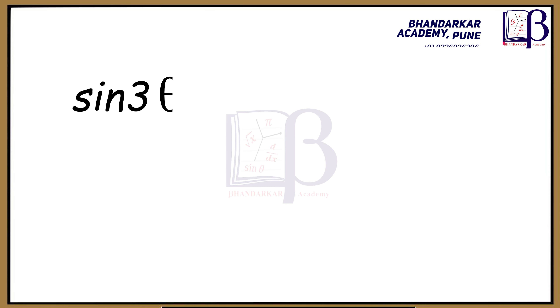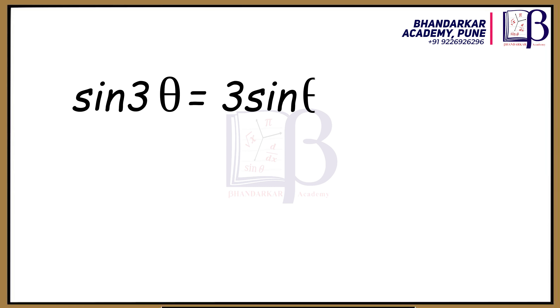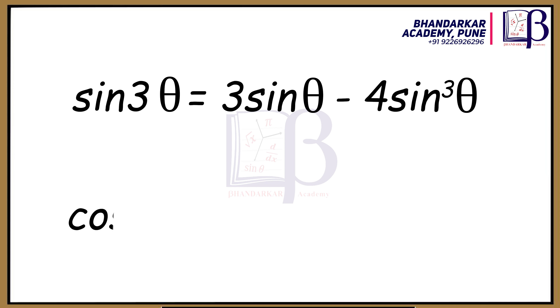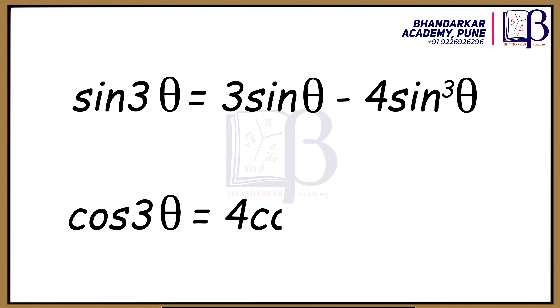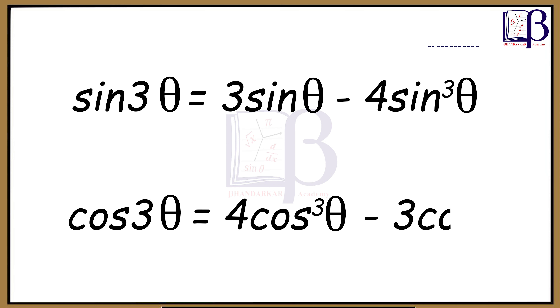sin 3θ = 3 sin θ − 4 sin³θ. cos 3θ = 4 cos³θ − 3 cos θ.